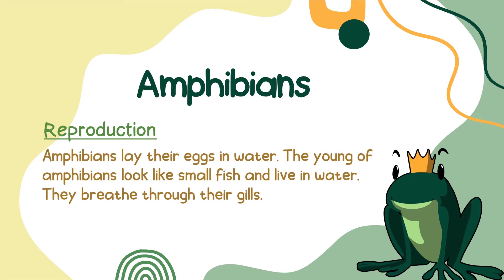Amphibians lay their eggs in water. The young of amphibians look like small fish and live in water. They breathe through their gills.